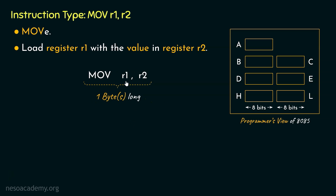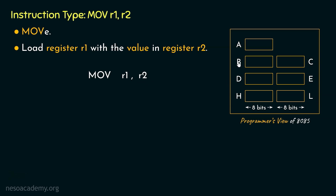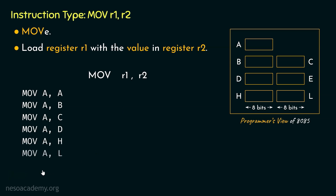This instruction MOV R1,R2 falls under the category of 1-byte-long instructions. There are 202 1-byte-long instructions in the 8085. Now, this is the instruction type — in reality there will be multiple instructions. If we take R1 to be the accumulator register A, and R2 can be any of the 7 registers including A, we are going to have 7 different instructions: MOV A,A — MOV A,B — MOV A,C — and so on through MOV A,L.